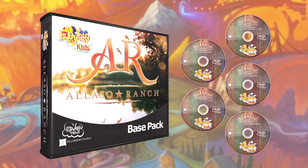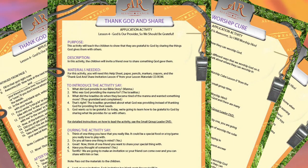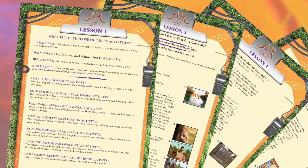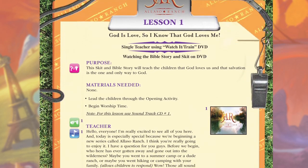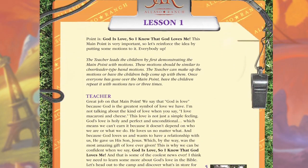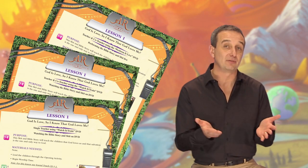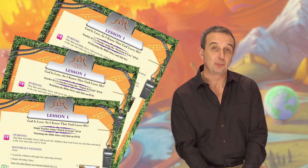When you order Elevate Kids, you'll receive a base pack in the mail. In the base pack you'll find one lesson material CD-ROM that contains everything printable for each lesson, including children's activity sheets, small group leader help sheets, take-home activities, scripts for each lesson, and more. Each week you print off a script for your teacher or teachers. The scripts are easy to follow and give specific details about when to advance to the next DVD chapter. There are three different scripts to choose from for each lesson — you simply choose the script that's right for your environment.